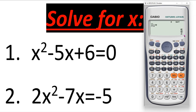The first value of x is 5 over 2, and the other value is 1. These two values satisfy equation number two. This is the way of solving the quadratic equation using this calculator. Thank you all for watching this video.